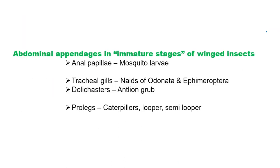Now we are going to discuss about abdominal appendages in immature stages of winged insects. They are: anal papillae in mosquito larvae, tracheal gills in nymphs of water Odonata and Ephemeroptera, dolly casters in antlion grub, and prolegs in caterpillars — loopers and semi-loopers.